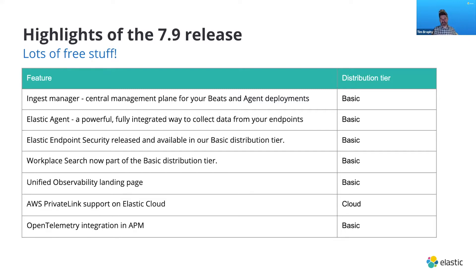So what we've created is an Elastic Agent — essentially one executable that sits on the host. It has capabilities to collect a whole myriad of different types of data, from audit data to file logs, metrics, and security data, but it only collects what you tell it to. It's a great way to segment what kind of data you're getting throughout your environment. And if you want to expand — say you want observability — you can add capability centrally without going to every single box to download an additional beats package.